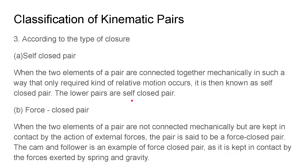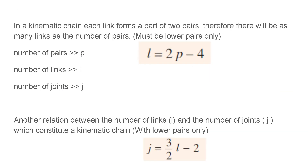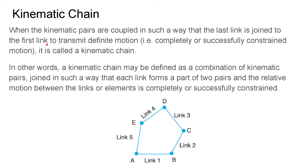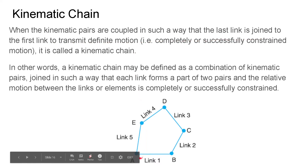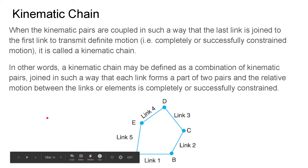In a kinematic chain, kinematic pairs are coupled in such a way that the last joint is linked to the first to transmit a definite motion. We put some motion to the first link and due to the connectivity the last link will have a definite required motion as per our requirement, so we can transmit some energy from one point to another using this kinematic chain.